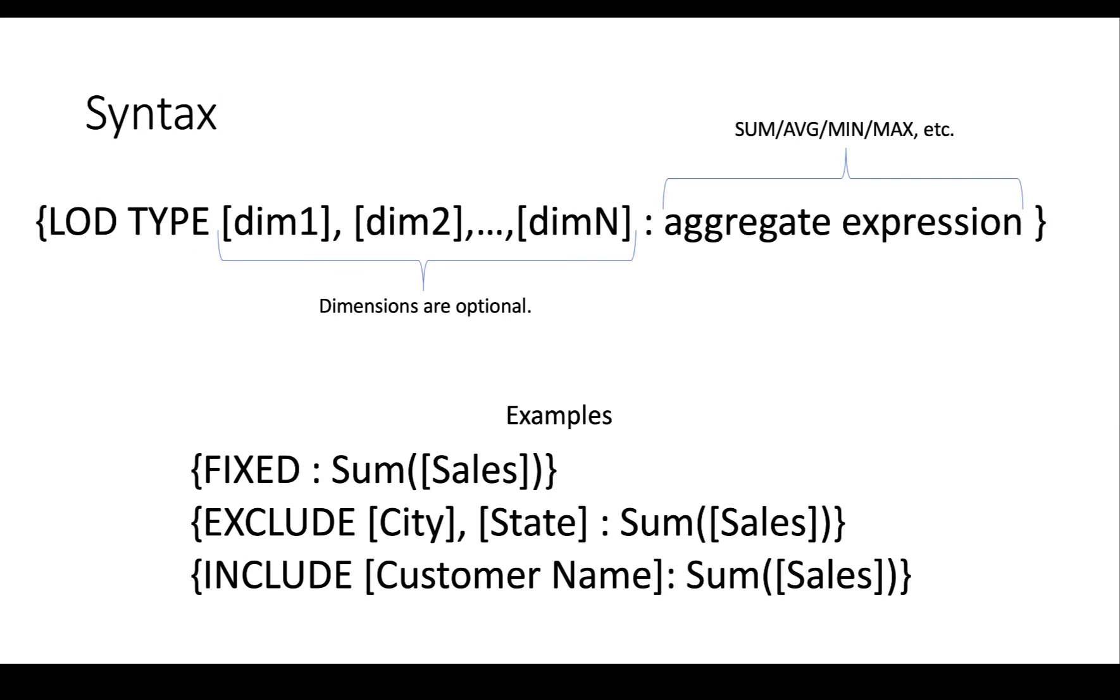Now, the syntax, you have to do this in a calculated field, and the syntax for all of the level of detail expressions is fundamentally the same. It's the level of detail type, which is one of three things: fixed, exclude, include. Then there's these dimensions that you can or you may or may not use. You don't have to use them, but we'll talk about what it means. Then there's always a colon. And then on the right side of the colon, you have to say, what's the aggregate expression?